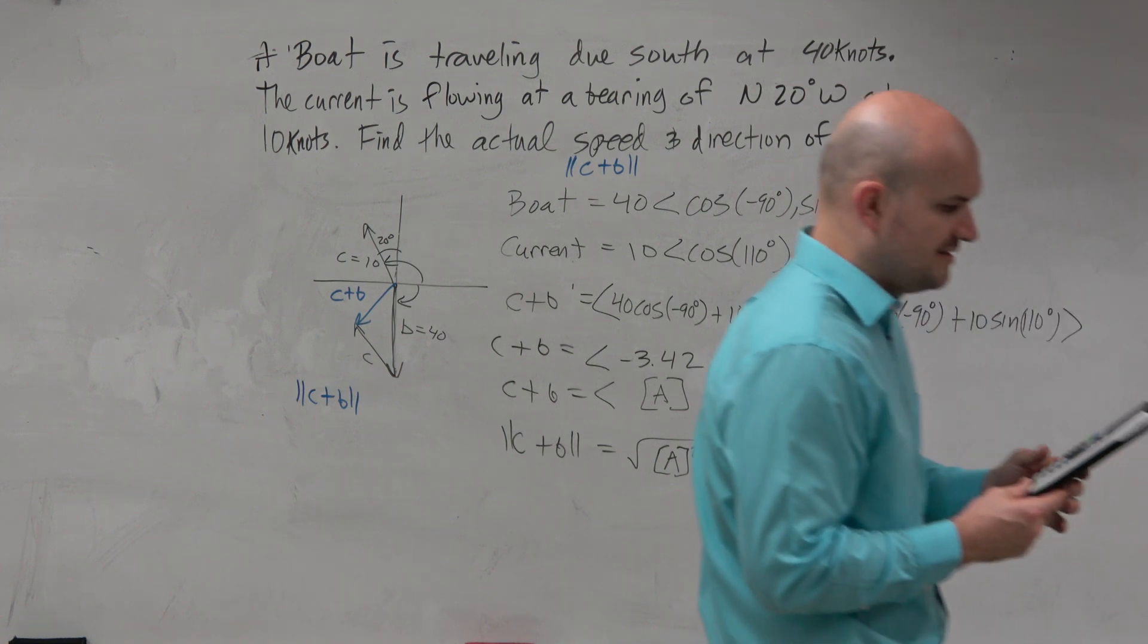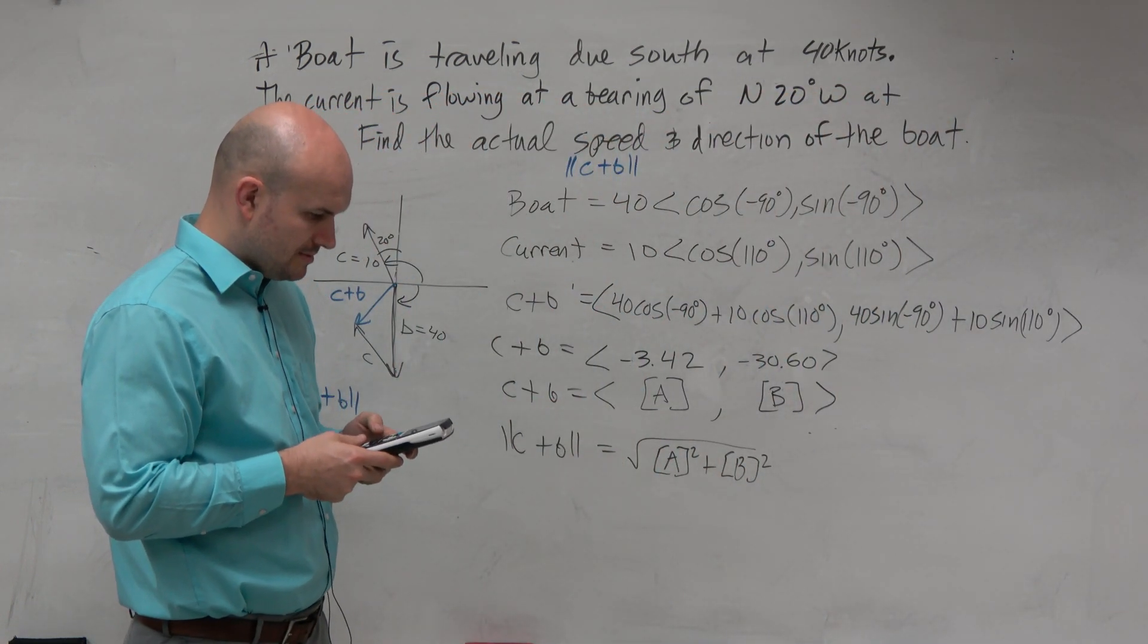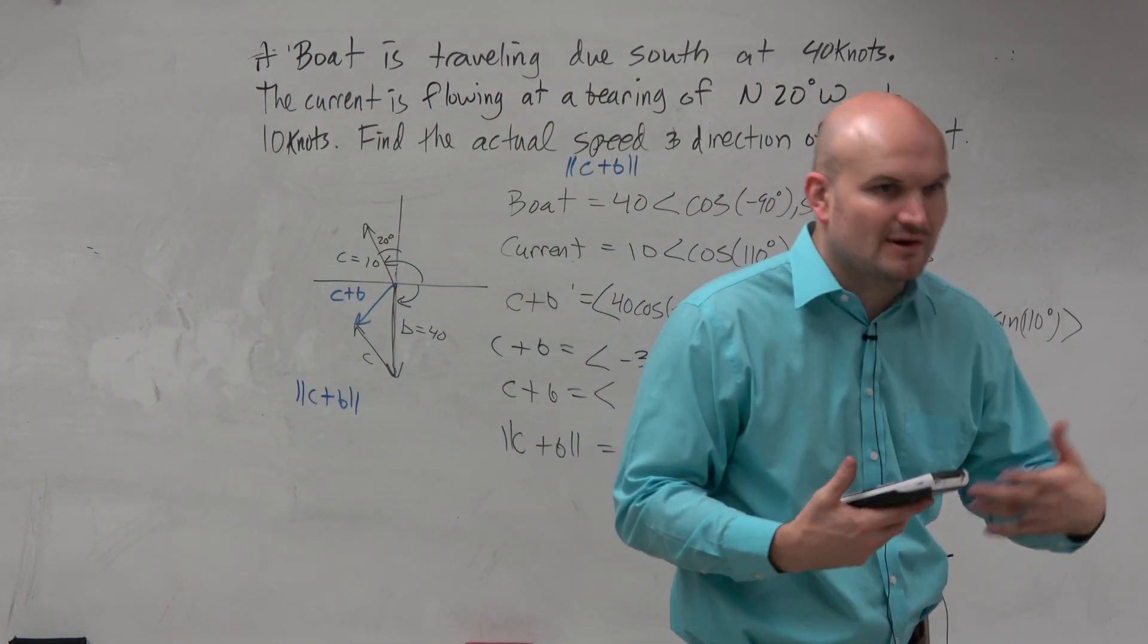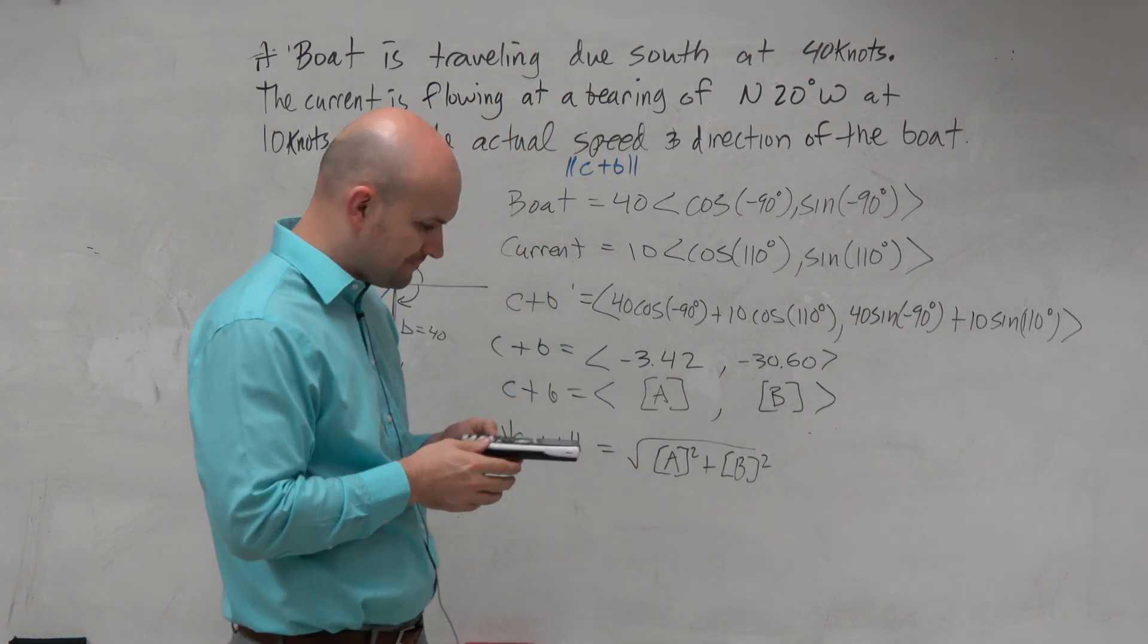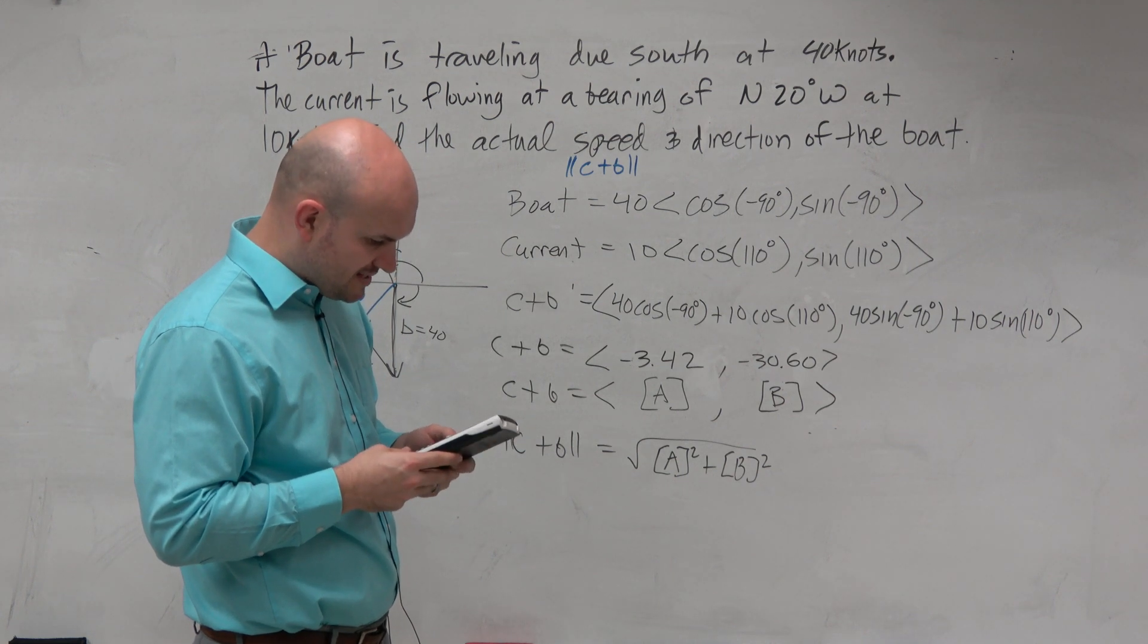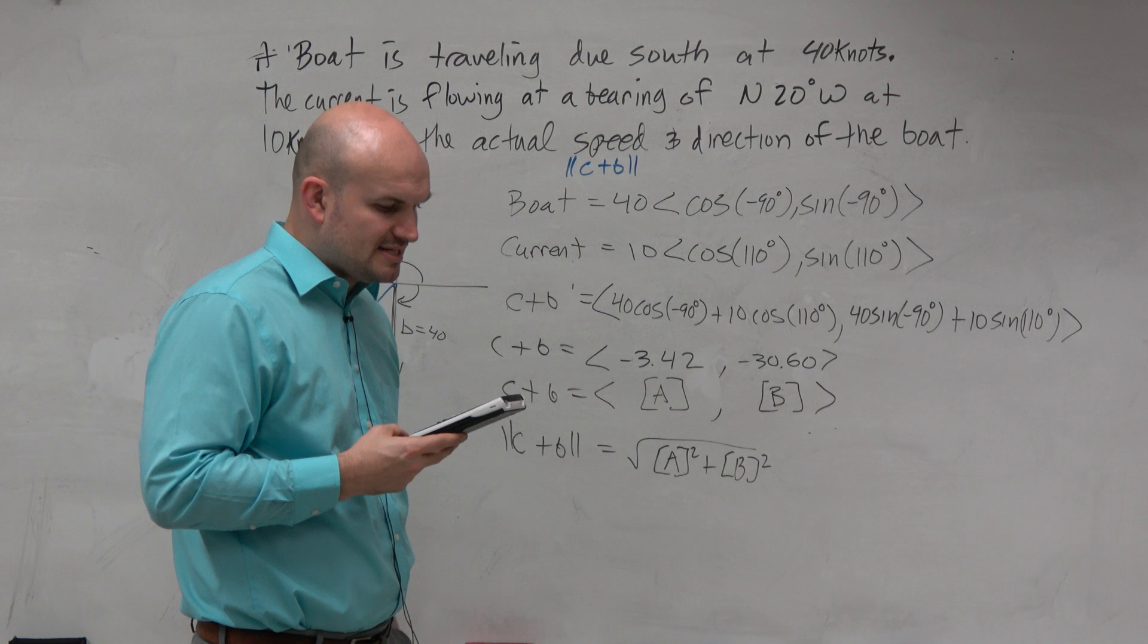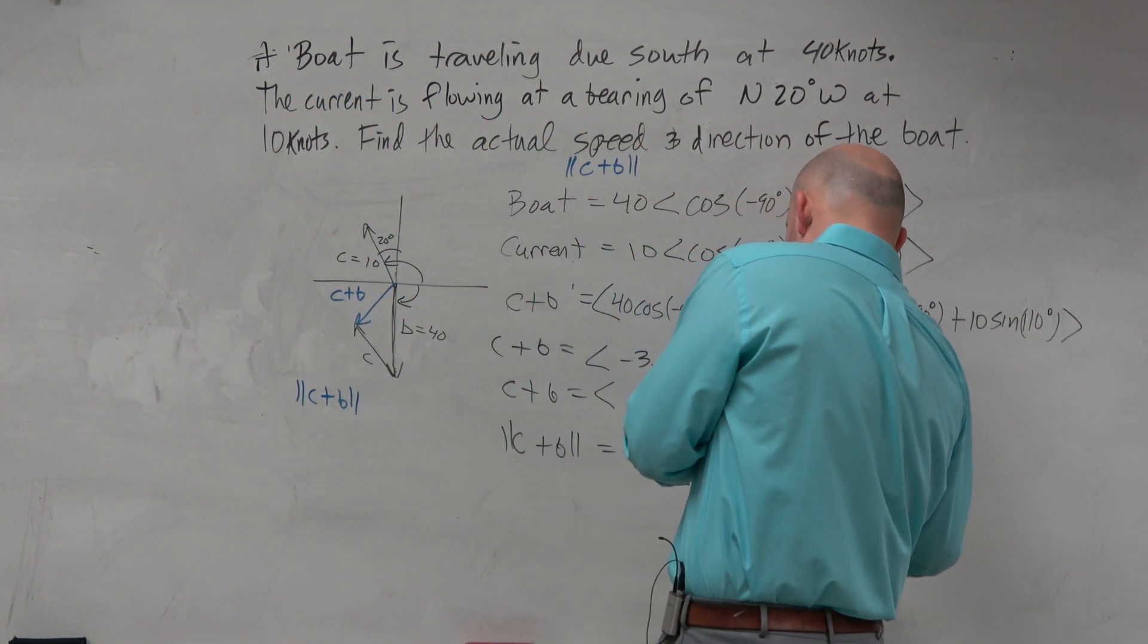So, is this the one I saved? Yes. You shouldn't use the rounded answer. I would not use the rounded answer. But technically, you should never be using your rounded answer, right? So I'll use alpha A squared plus alpha B squared. And I'm getting 30.79 knots. And does that sound about right? Yeah.